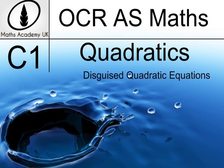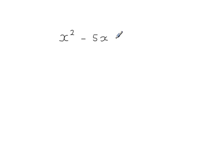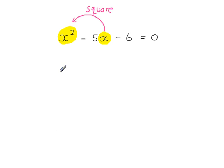Disguised quadratic equations. A typical quadratic equation is like x squared minus 5x minus 6 equals 0. In this equation, if we look at the x and the x squared, you can see that to go from one to the other you have to square. You may find the same thing to be true with equations which are not quadratic but which are described as disguised quadratic equations. For instance, consider 2v to the power of 6 plus v to the power of 3 minus 10 equals 0.